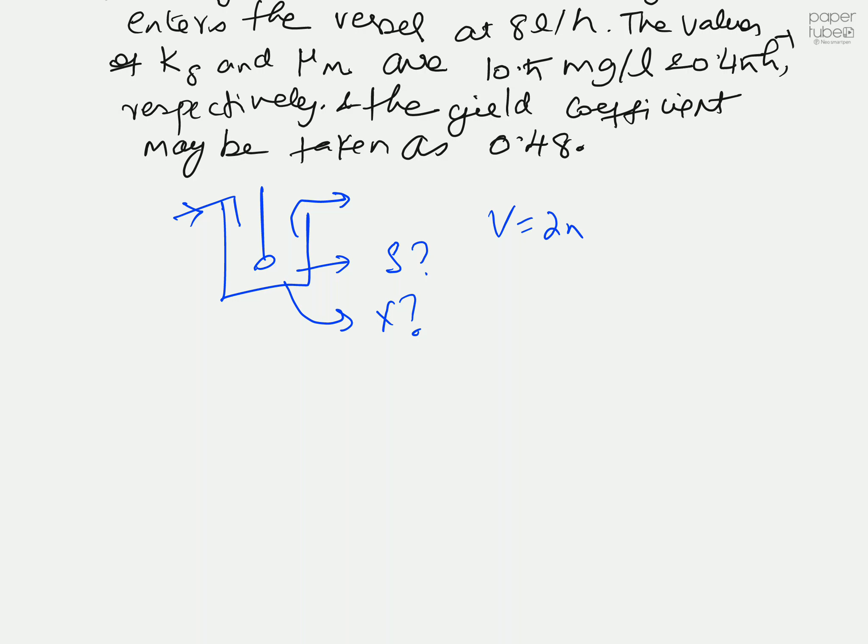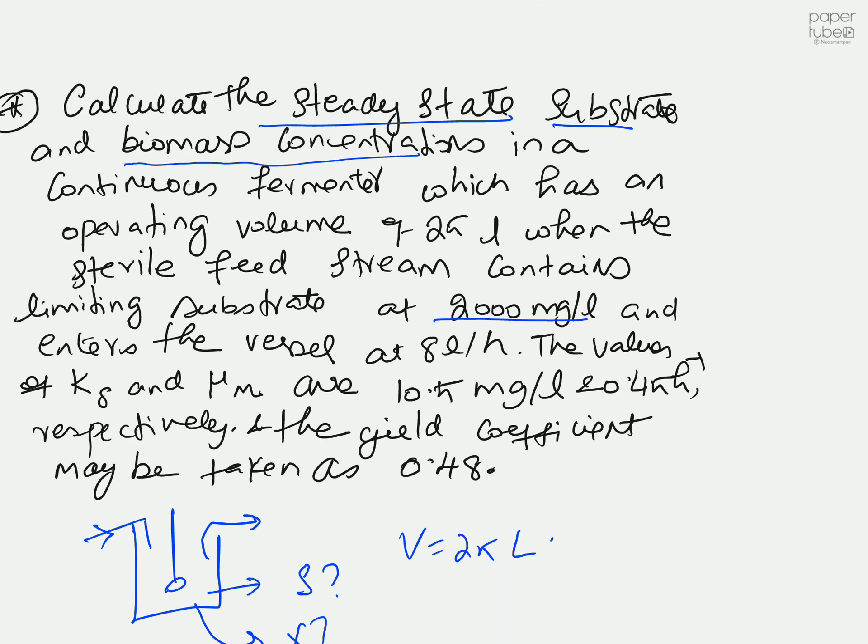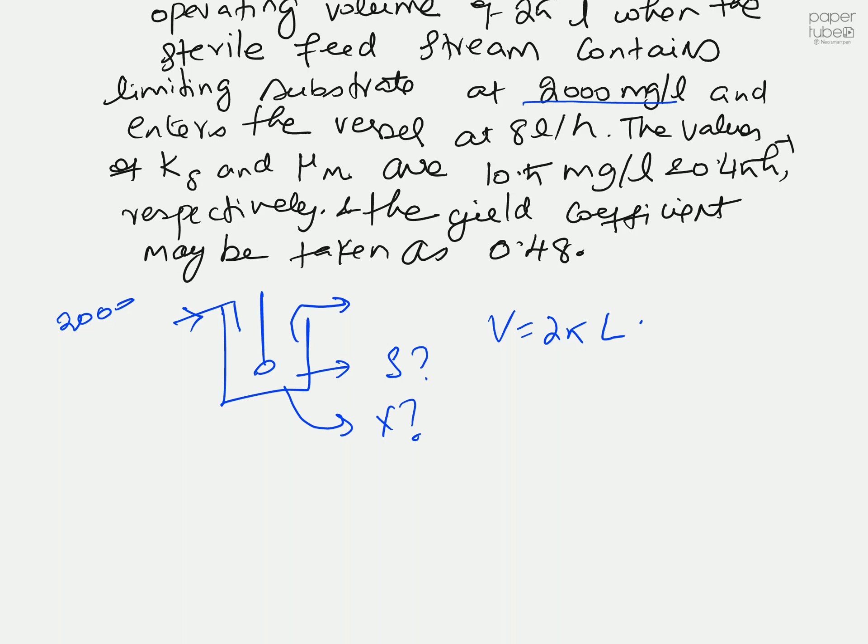The sterile feed stream contains substrate concentration 2000 milligrams per liter. Something goes inside that has this substrate concentration of 2000 mg/L and it enters the reactor at a rate of 8 liters per hour.